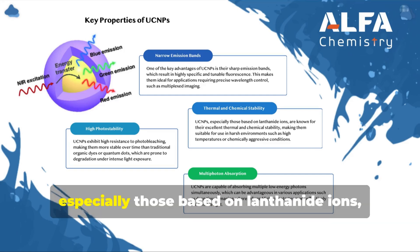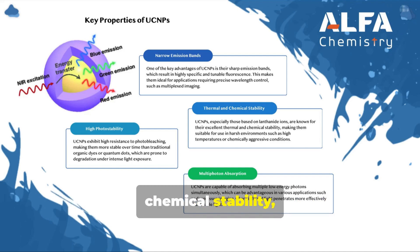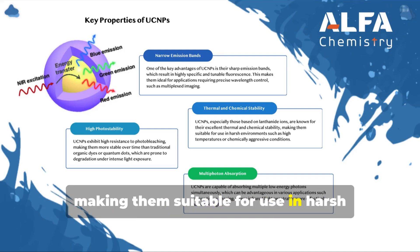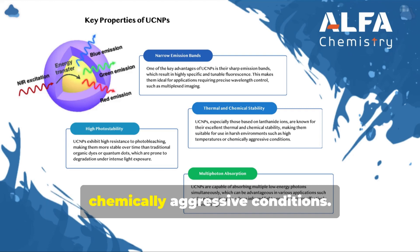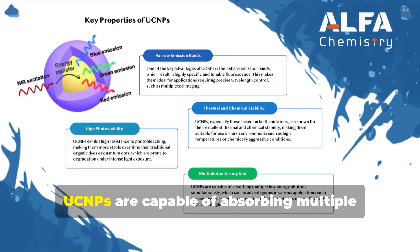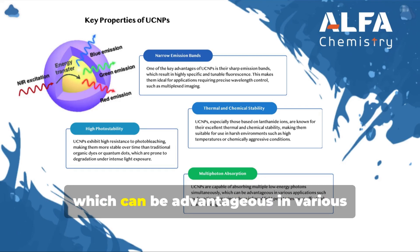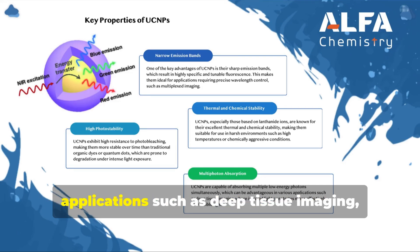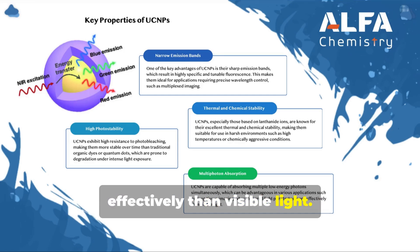UCNPs, especially those based on lanthanide ions, are known for their excellent thermal and chemical stability, making them suitable for use in harsh environments such as high temperatures or chemically aggressive conditions. UCNPs are also capable of absorbing multiple low-energy photons simultaneously, which can be advantageous in applications such as deep tissue imaging, where infrared light penetrates more effectively than visible light.